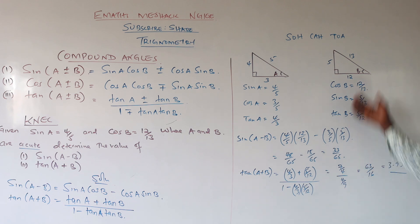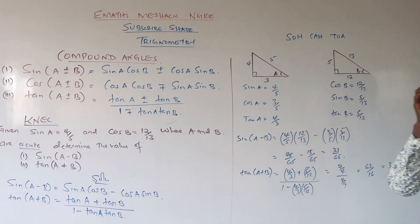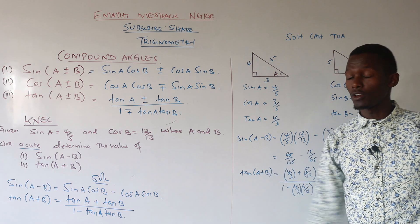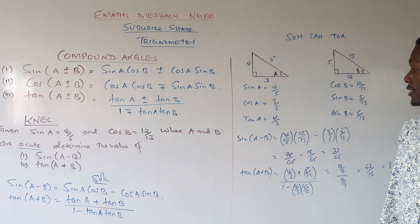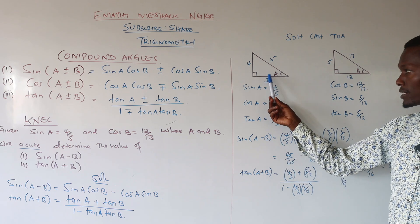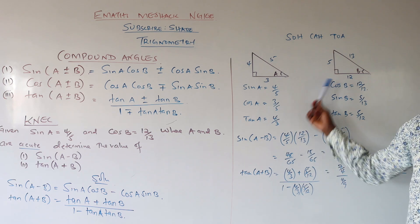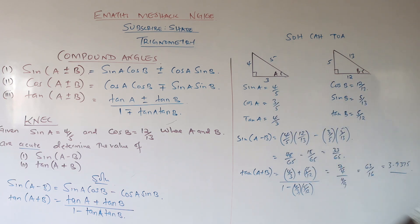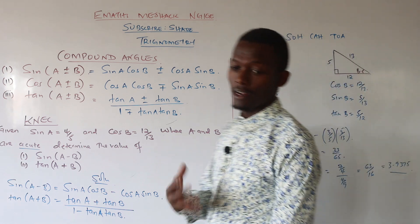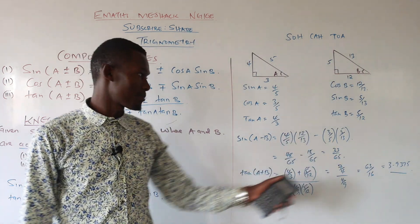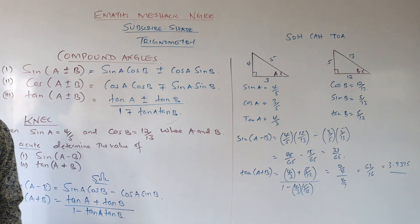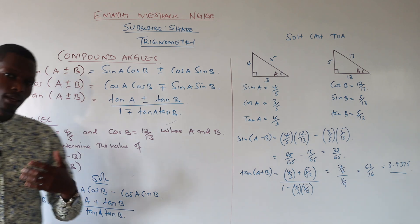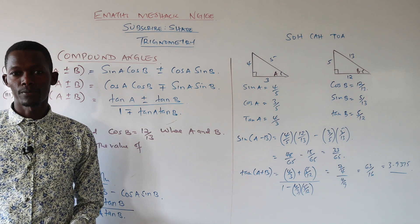So the steps are: write the compound angle relationship, draw two triangles for your particular angles, find all the trigonometric ratios, then substitute the fractions into the relationship to get your answers. Let us now check another example where one angle is acute and the other is obtuse.